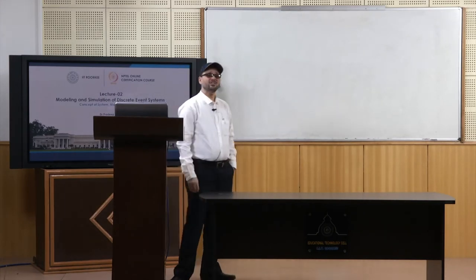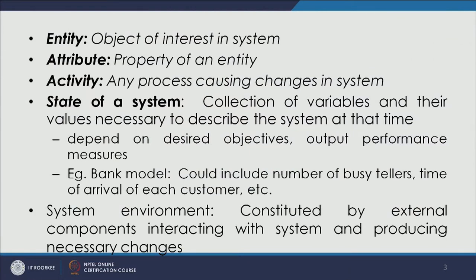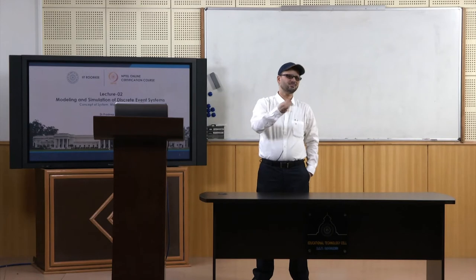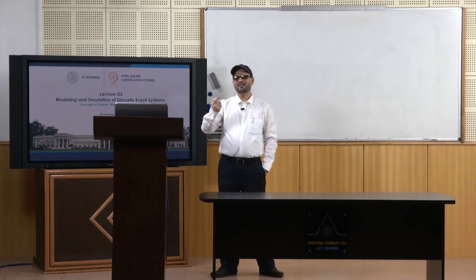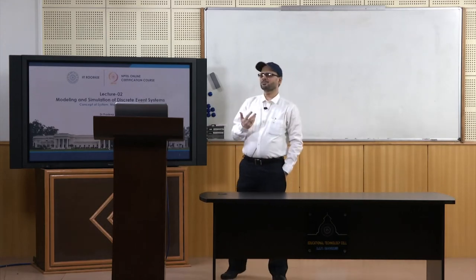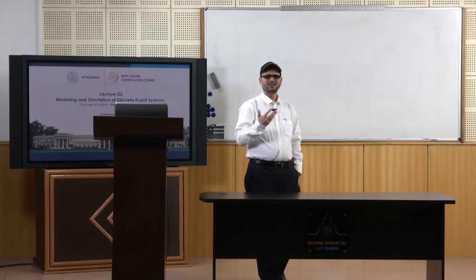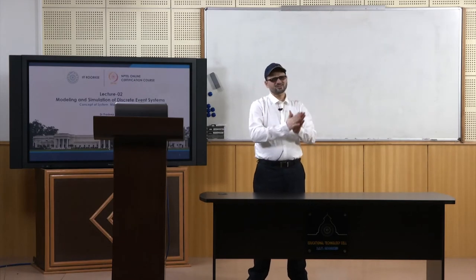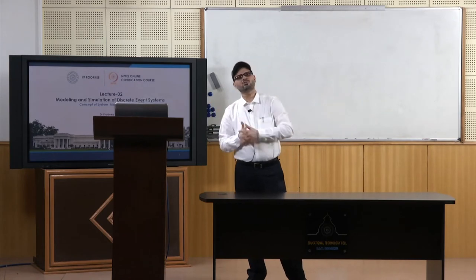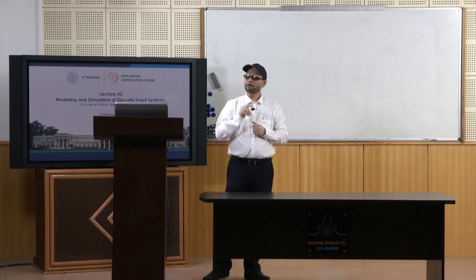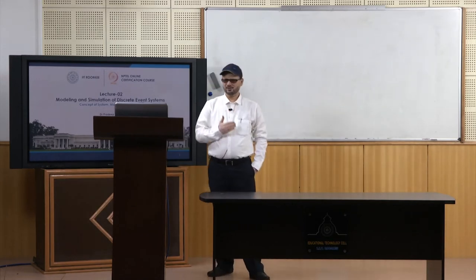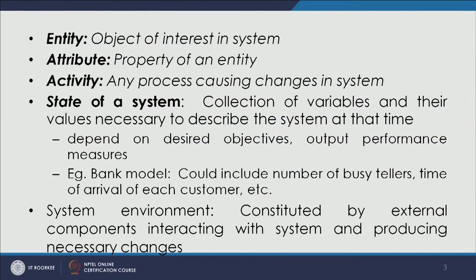An entity is the object of interest in the system — in a bank, a customer is an entity and a server is an entity. An attribute is the property of an entity: the server may be busy, idle, or not busy. A person may be in the queue, getting service, or leaving the system — these are attributes associated with the entity.